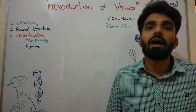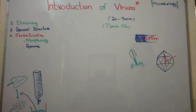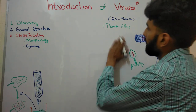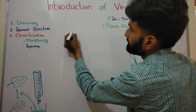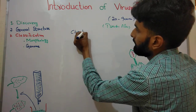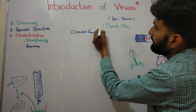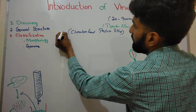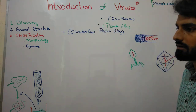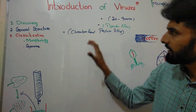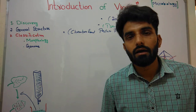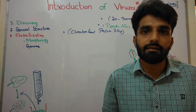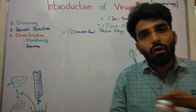Viruses can infect approximately all types of life present on Earth. The discovery of virus basically took place after the discovery of a very important filter known as the Chamberland-Pasteur filter, also called the porcelain filter. This is a filter that can remove approximately all possible bacteria — it can filter out and remove all the bacteria from a solution.